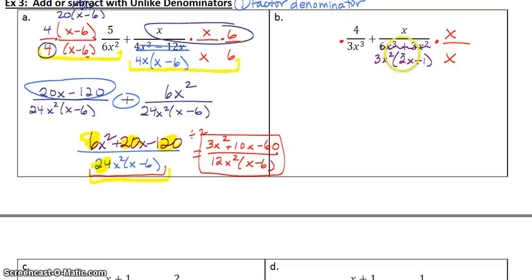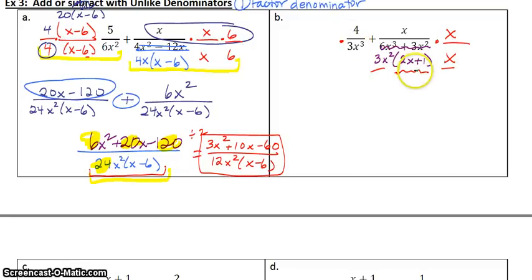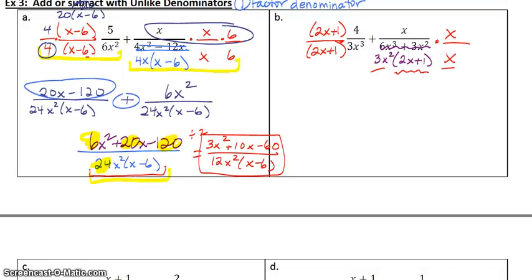Now ask myself, what does the right one have that the left one does not? We made it so that 3x cubed is going to be the same. But the one on the left does not have a 2x plus 1 on bottom, so this one I need to multiply by 2x plus 1 over 2x plus 1. We're going to multiply the tops.